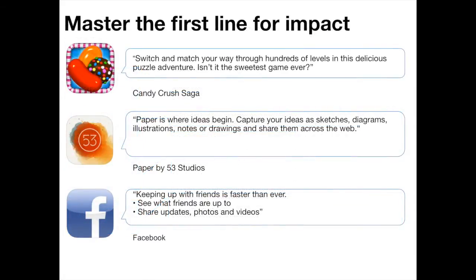First up, you need to make sure that you master the first line for impact. People who are reading app store descriptions are likely to be consumers who aren't too certain about whether they want your app or not. They want it enough that they'll consider reading the description, but they're uncertain to the point that your app icon, app name, screenshots and potentially app video haven't convinced them. So you want to make sure that first line makes a really good impression to keep those uncertain consumers from getting spooked.